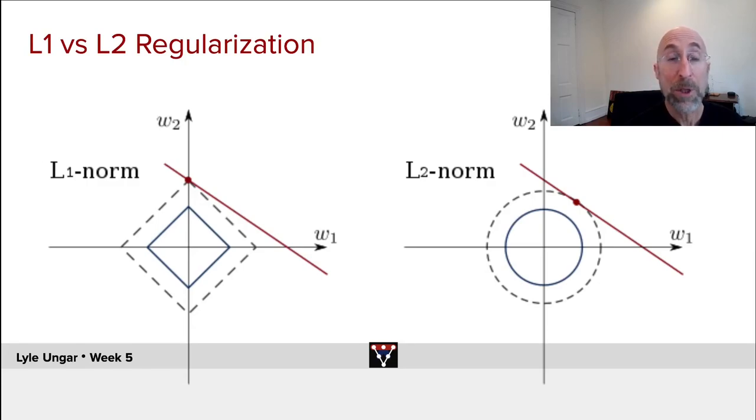The L1 norm gives these little diagonal, sort of diamond-shaped equality pieces. Think about it - at this point, the smallest L1 norm on this line is in fact W2 being this value and W1 being 0.